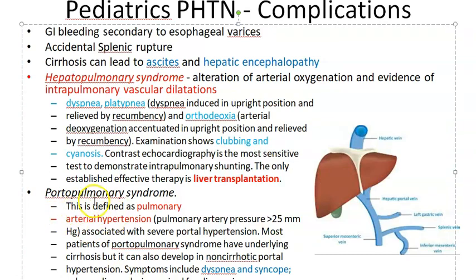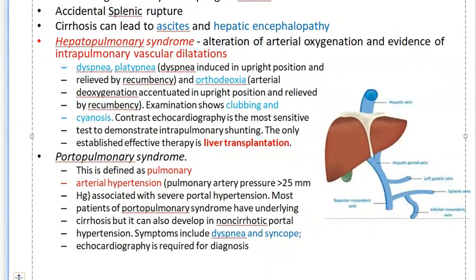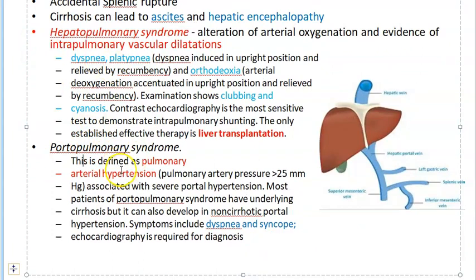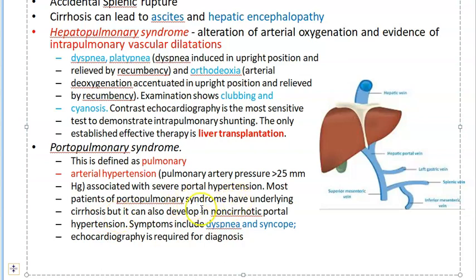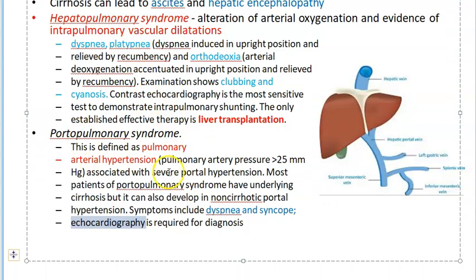Porto-pulmonary syndrome is pulmonary arterial hypertension secondary to portal hypertension — a pulmonary arterial pressure greater than 25 mmHg. These patients can have cirrhosis or non-cirrhotic portal hypertension. They present with dyspnea, syncope, and echocardiography is used for diagnosis.